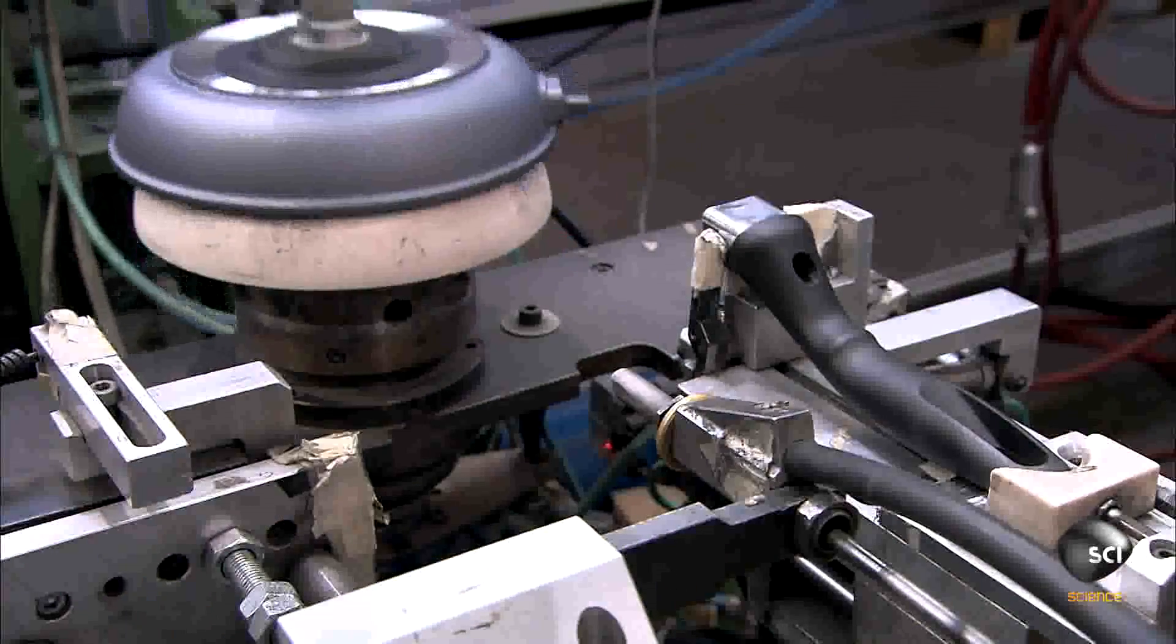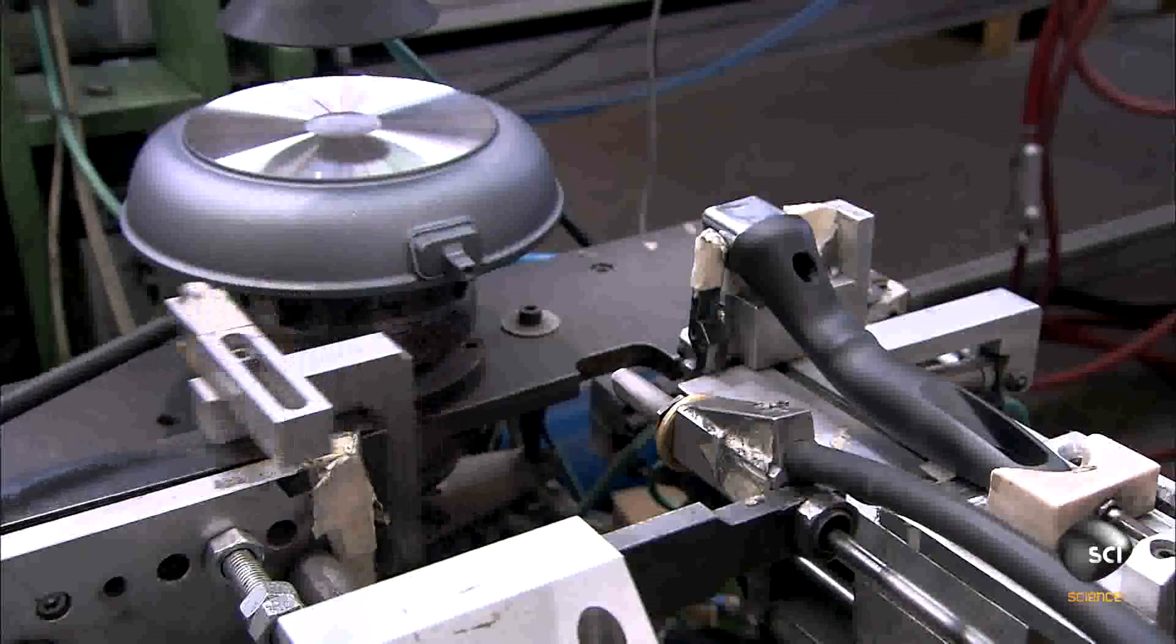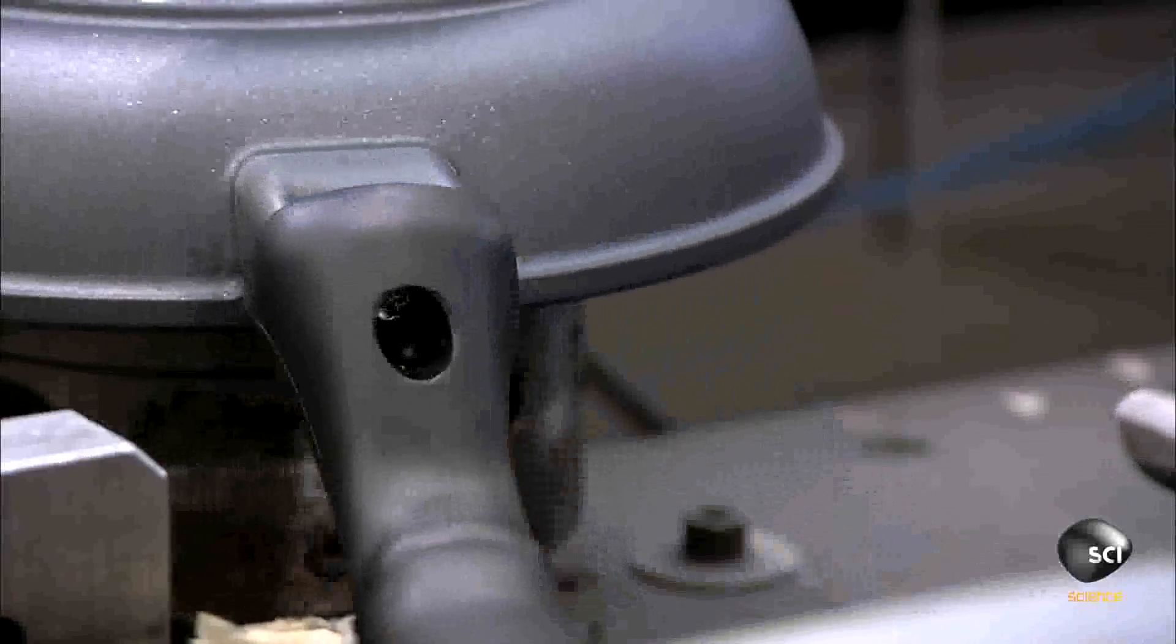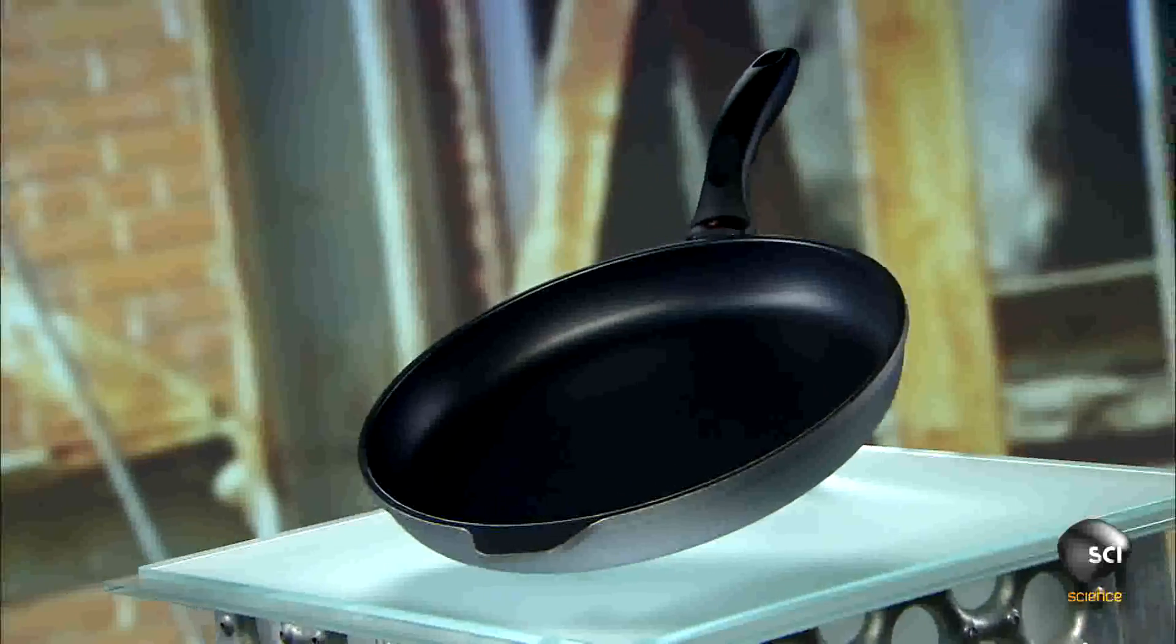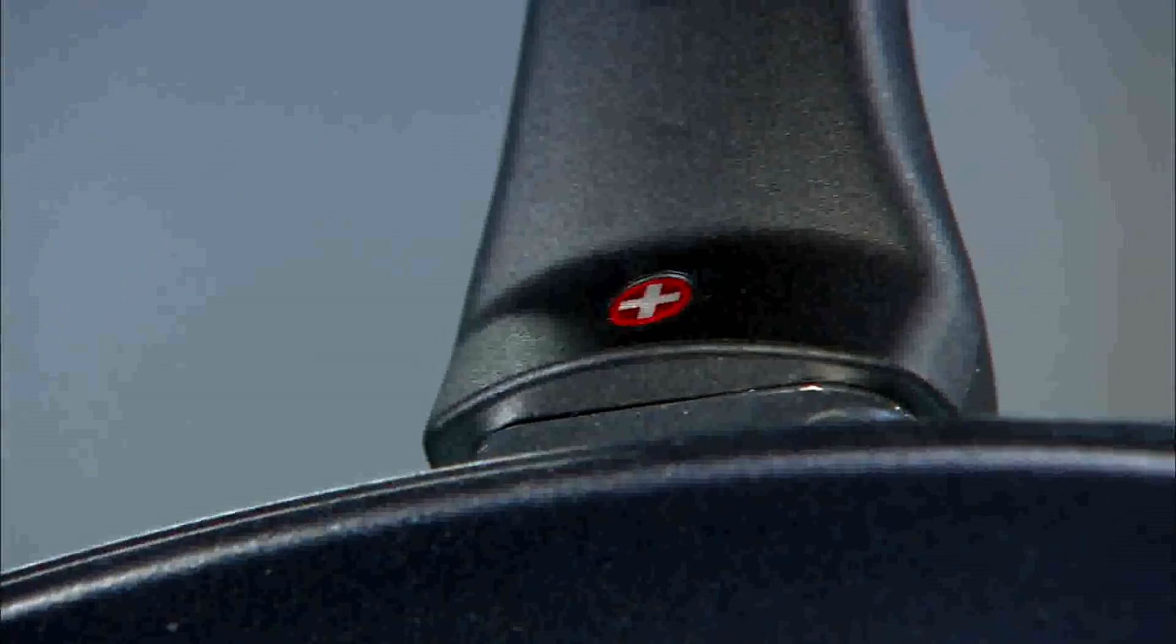A suctioning robot moves the frying pan to the next station, where a worker attaches a handle to the pan. Thousands of nonstick frying pans are ready to leave the factory and cook up a tasty meal.